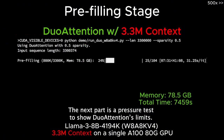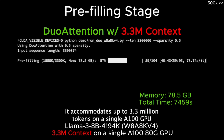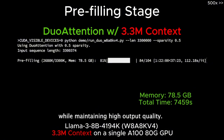The next part is a pressure test to show Duo Attention's limits. It accommodates up to 3.3 million tokens on a single A100 GPU while maintaining high output quality.